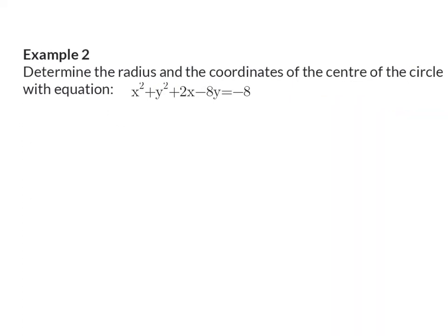Let's have a look at another example. Example 2: Determine the radius and the coordinates of the center of the circle with equation x squared plus y squared plus 2x minus 8y equals minus 8.